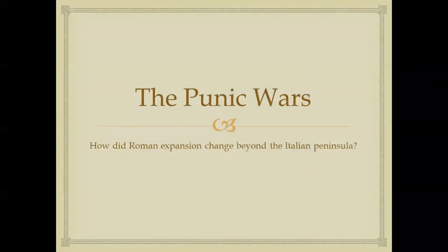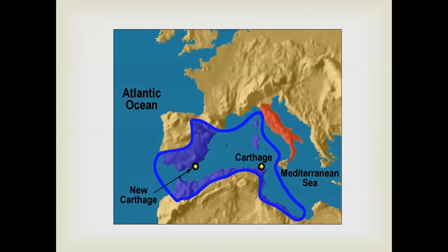The next stage of Rome's development is the Punic Wars. How did Roman expansion change beyond the Italian peninsula? The early Roman Empire was just the Italian peninsula, shown in red, but they became a major power on the Mediterranean. Their rise brought them into conflict with other major powers on the Mediterranean — most importantly, the power of Carthage.